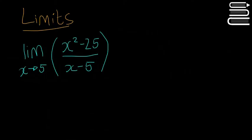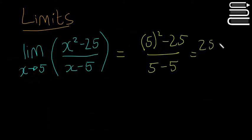We'll start by subbing it straight in and we'll see what happens. If we sub 5 straight in we're going to get 5 squared minus 25 over 5 minus 5. That's going to be 25 minus 25 over 5 minus 5.